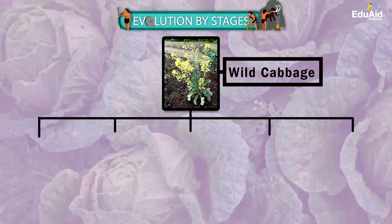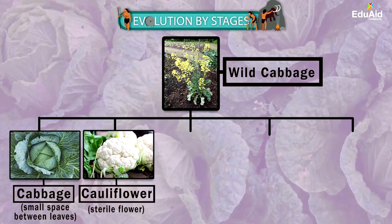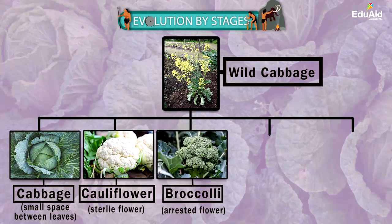Now some farmers wanted small spaces between the leaves, and this resulted in the production of cabbage, which we consume today as food. While some farmers wanted a sterile flower, and this resulted in the production of cauliflower. While some farmers wanted arrested flower development, and this resulted in the production of broccoli.